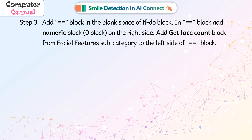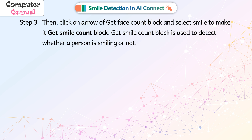Step 3. Add the is equal to block in the blank space of the if-do block. In the is equal to block, add numeric block zero on the right side. Add the get face count block from the facial features subcategory to the left side of the is equal to block. Then click on the arrow of the get face count block and select smile to make it the get smile count block.